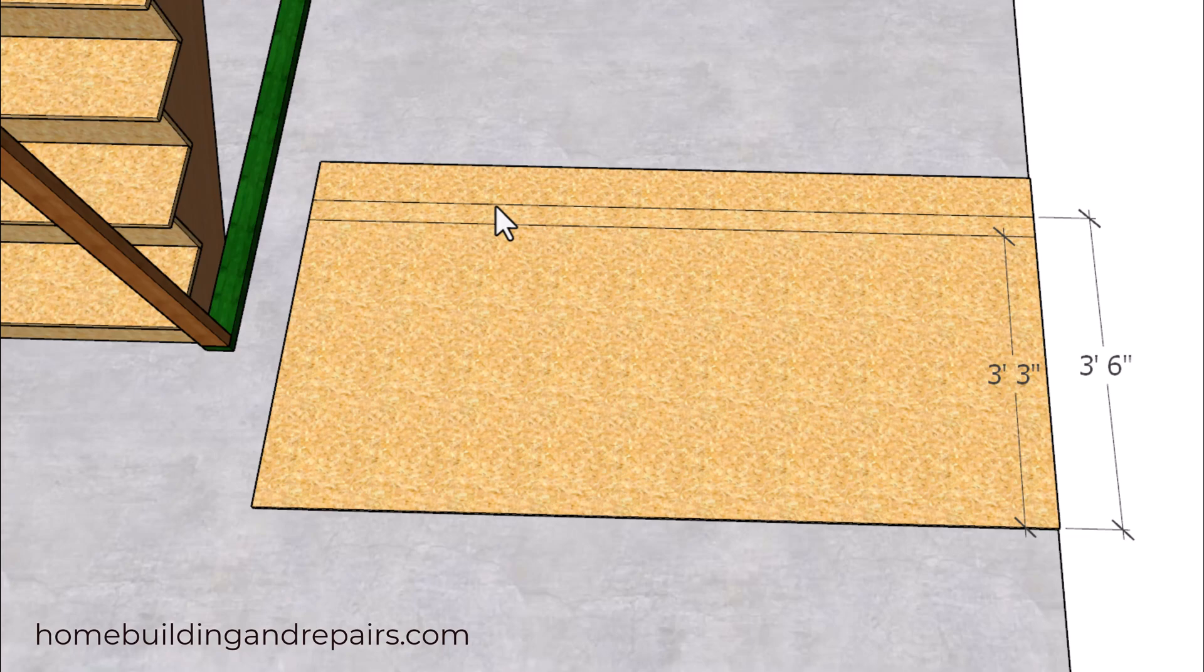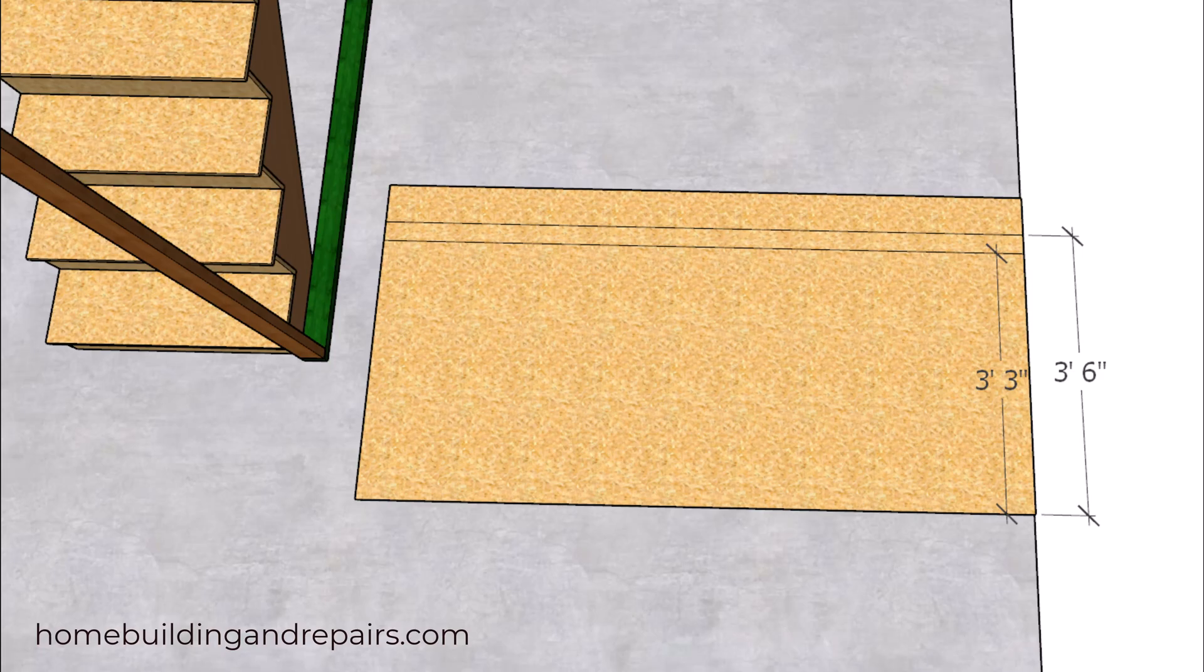But in our example we're not going to be cutting anything. We're simply going to lay out two lines. One will be the 42 inches or 3 foot 6 measurement, and the 3 inches less will represent two framing plates, even though I won't be providing you with an example of that in the video.